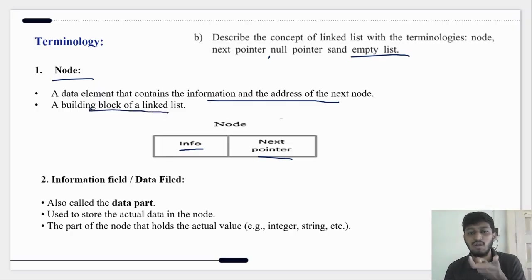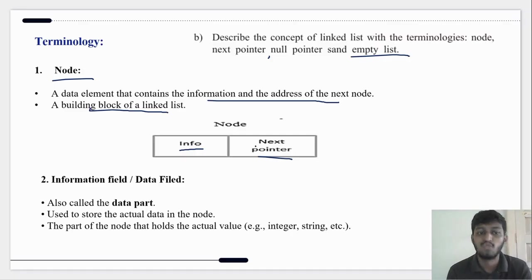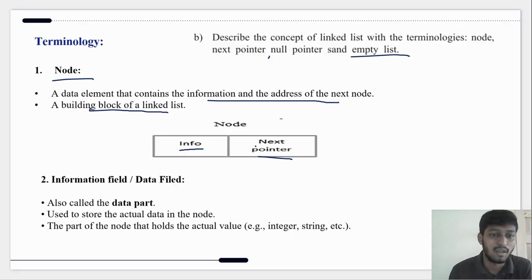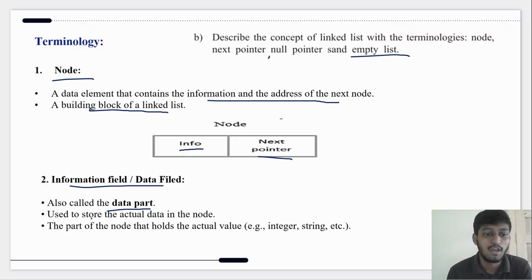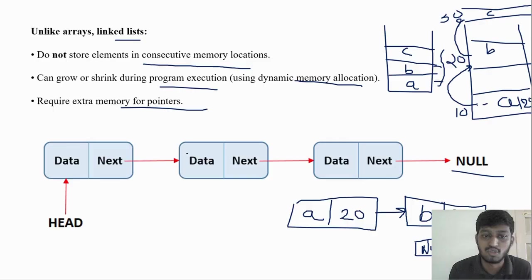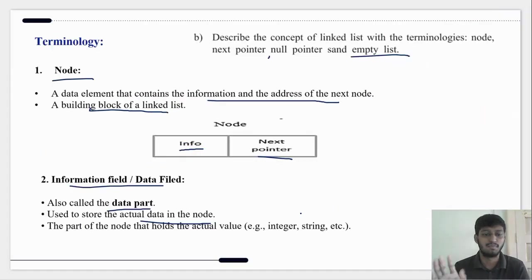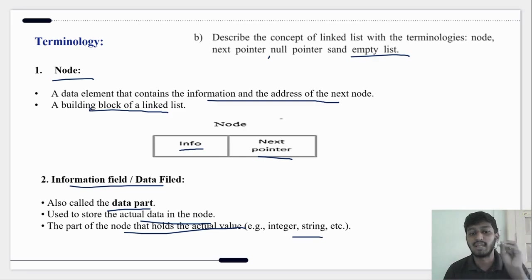A node is the basic building block of a linked list. Each node has two fields: first is the information field, also called the data field — this is the data part of the node that holds the actual value such as integer, string, etc. Second is the link field.